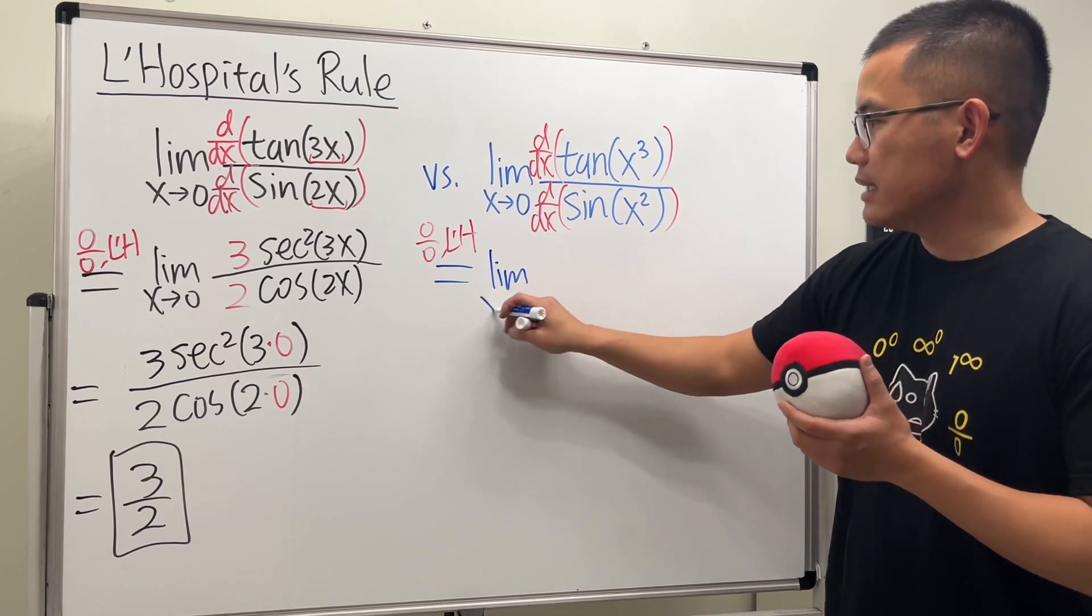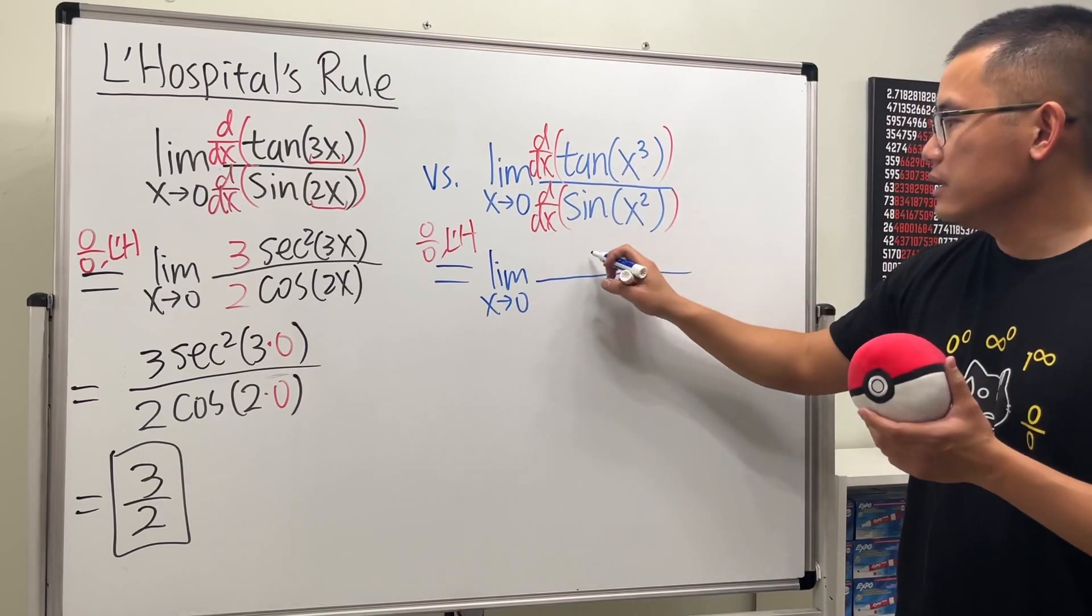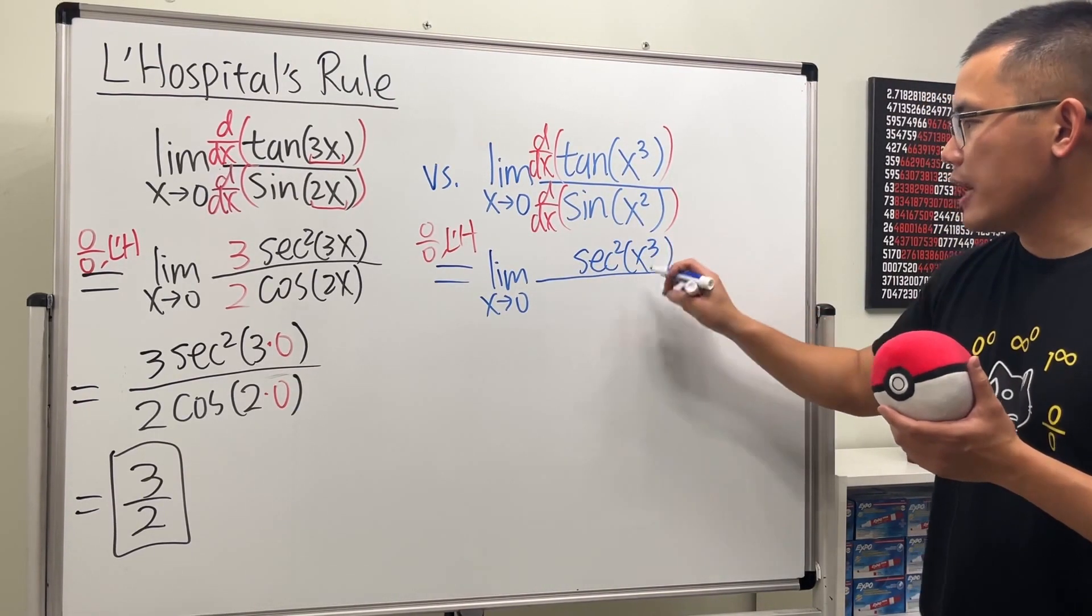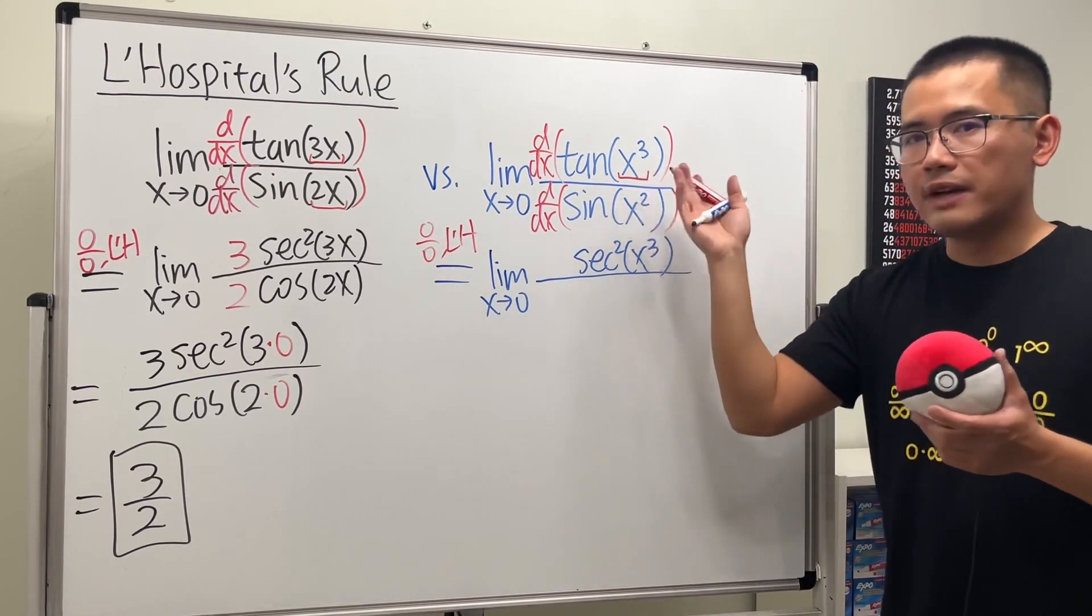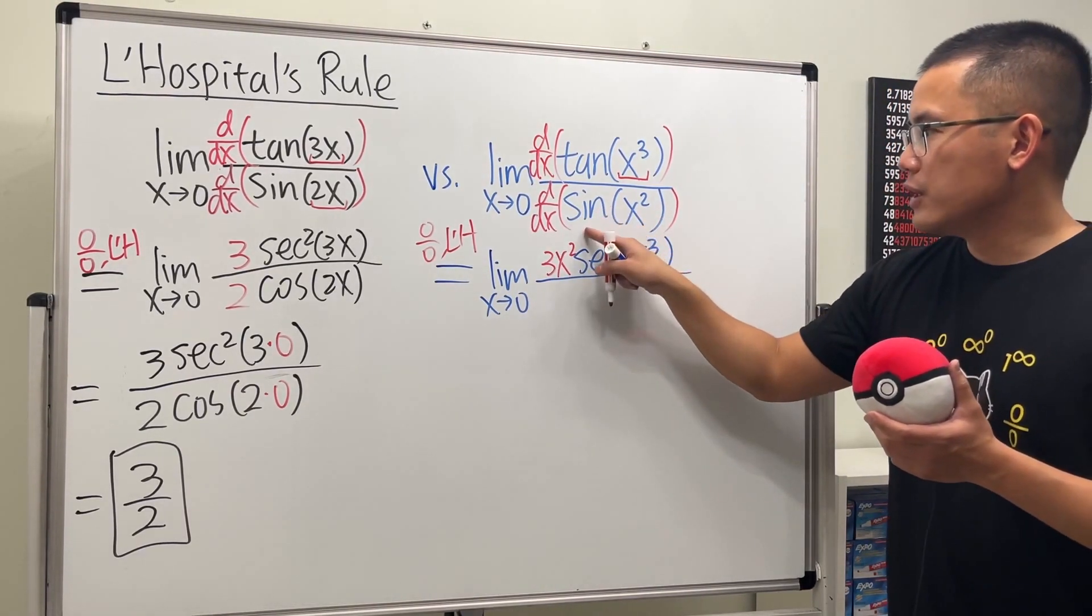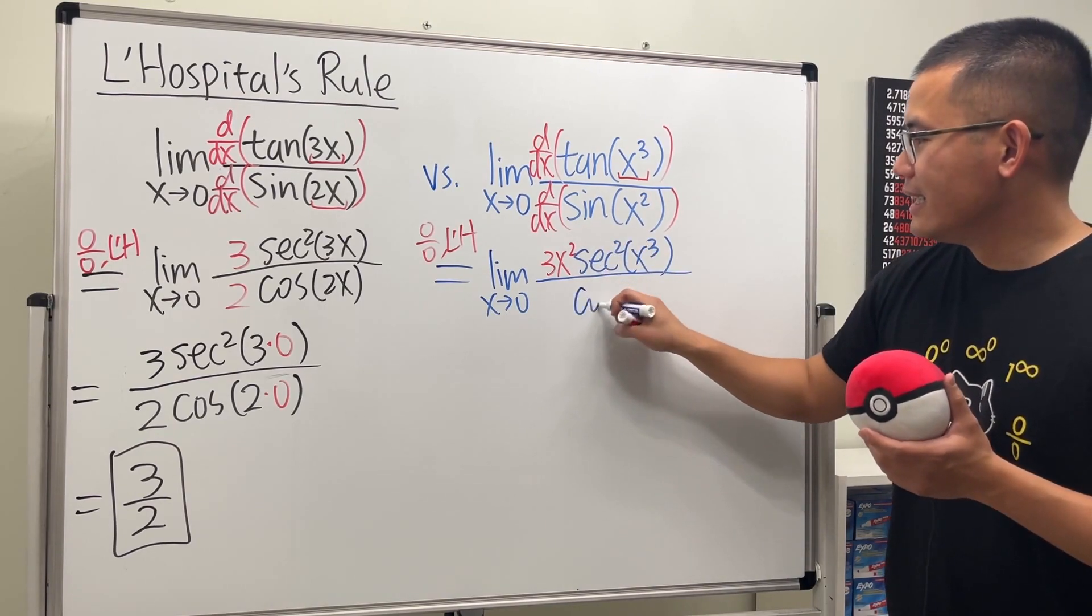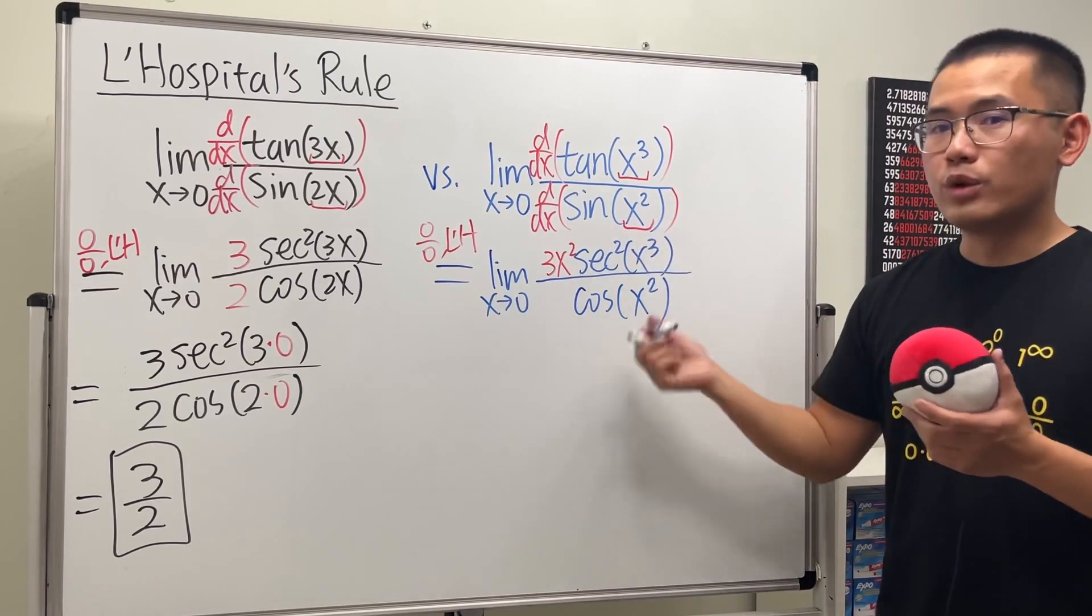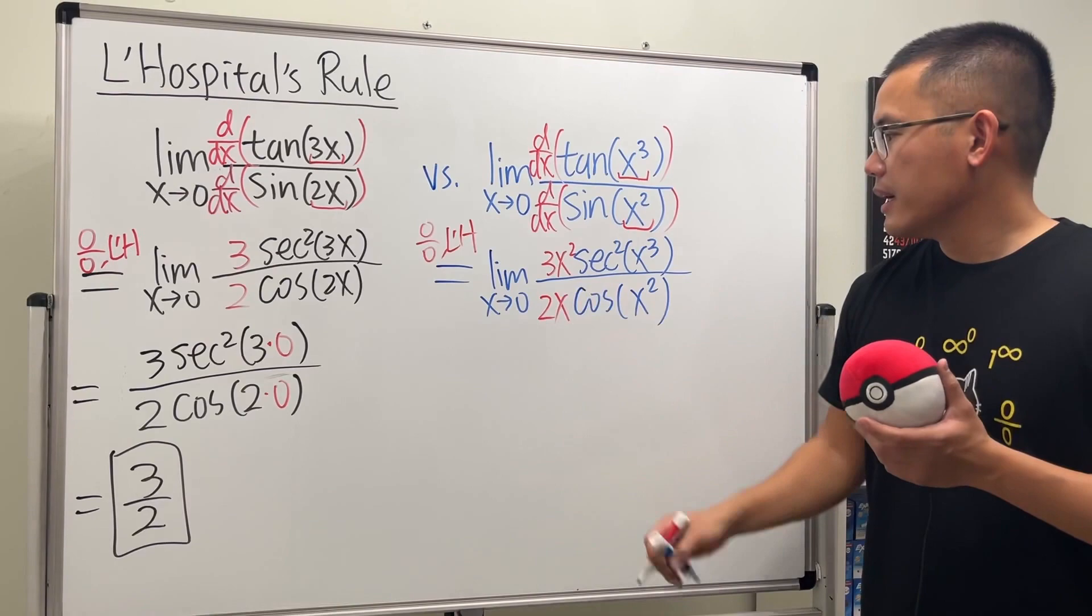And this is going to give us the limit as x approaching zero again. The derivative of tangent is secant squared, and the input stays the same. But use the chain rule—multiply by the derivative of x to the third power, and that's 3x squared. On the bottom, differentiate sine, we get cosine, and then the input stays the same, and we multiply by the derivative of x squared, which is 2x.